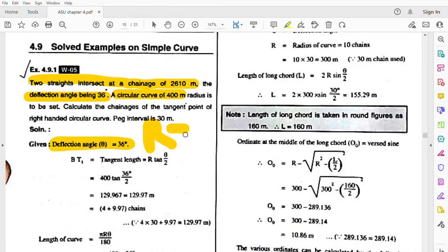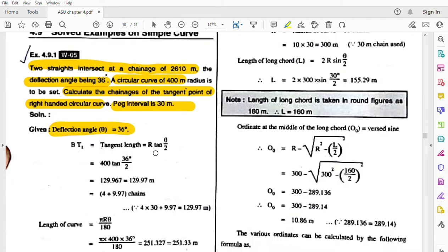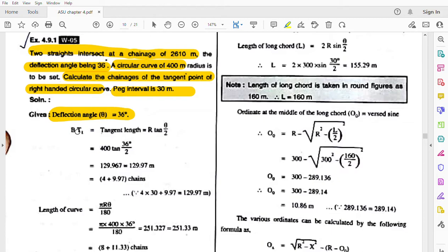A 400 meter radius curve is given. Calculate the chainage of the tangent point of the right-handed circular curve, and the peg interval is 30 meters.